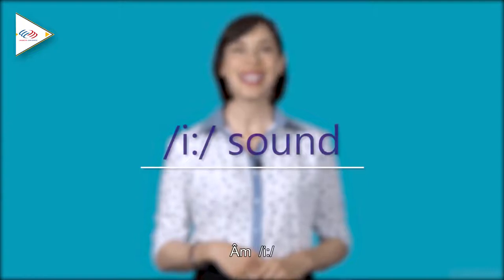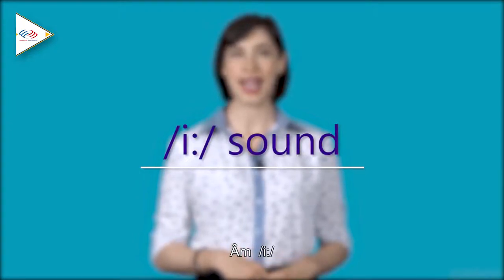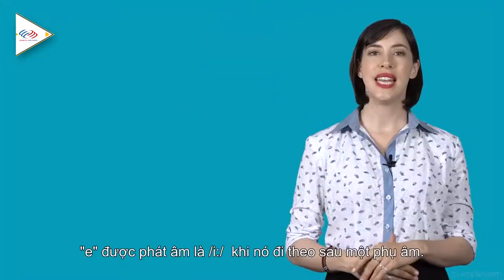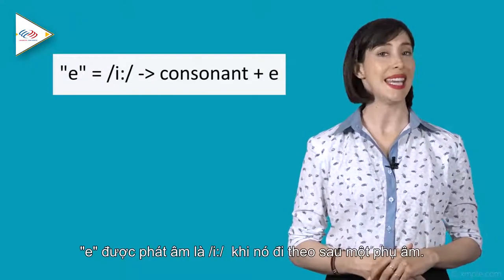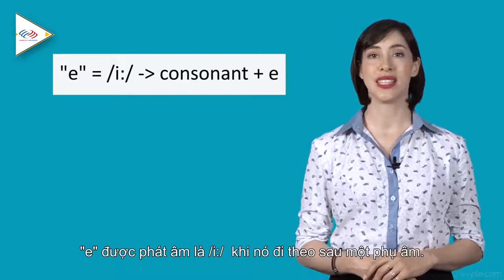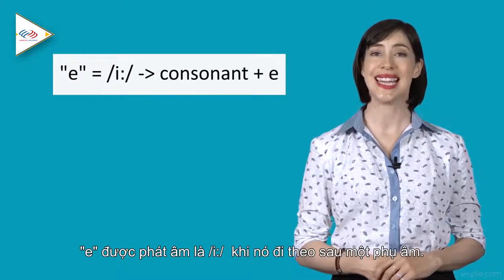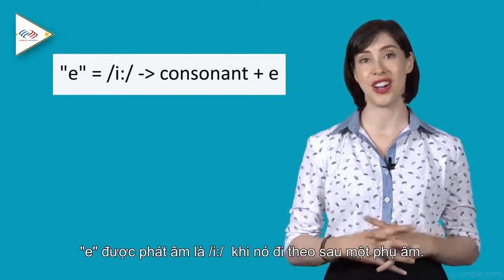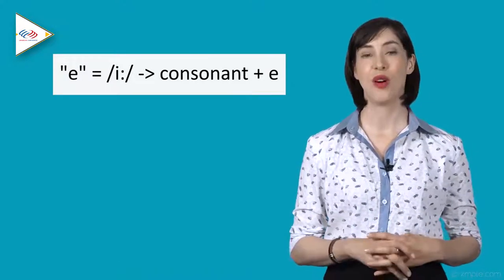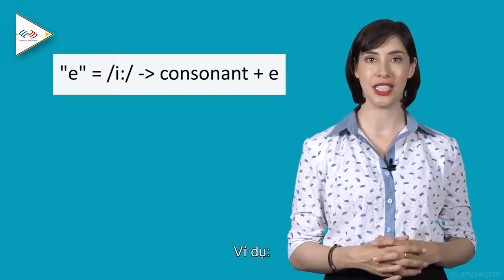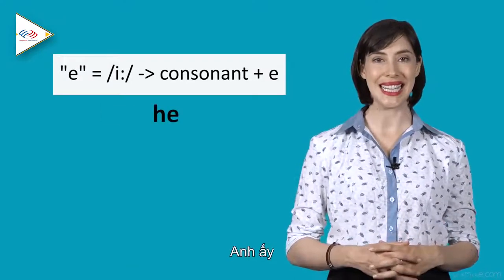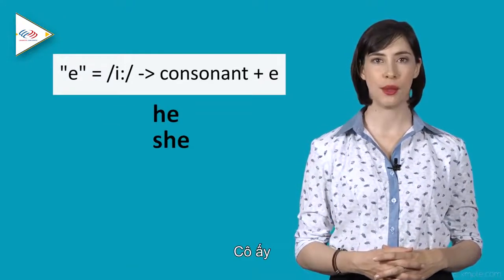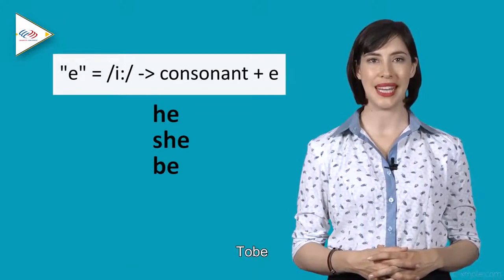The long E sound. Rule number one: the letter E is pronounced as a long E when it comes after a consonant. For example: he, she, be.